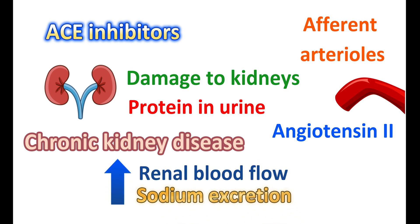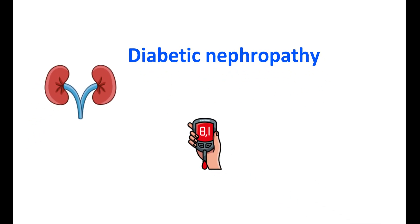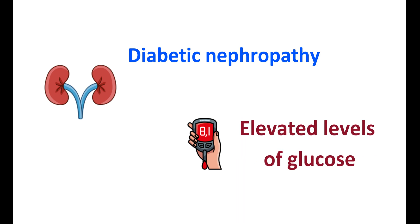ACE inhibitors can be used as first-line agents in people with chronic kidney disease, delaying the progression of kidney disease. They can also be given in people with diabetic nephropathy, where elevated glucose levels damage blood vessels in the kidneys, reducing filtering ability and leading to nephropathy. ACE inhibitors reduce blood pressure and reduce the progression of nephropathy in people with diabetes.